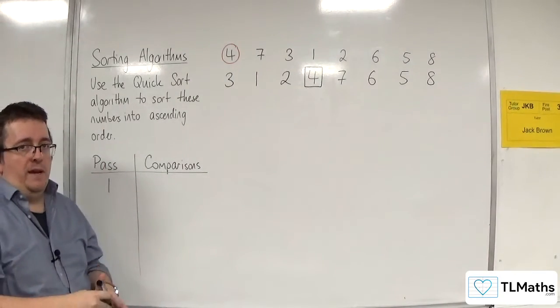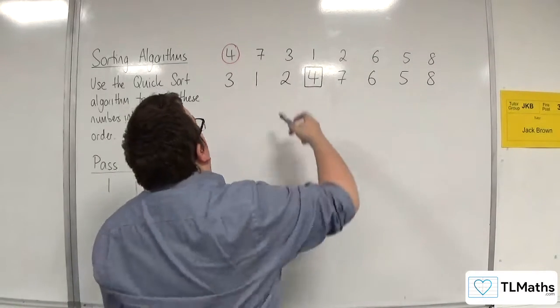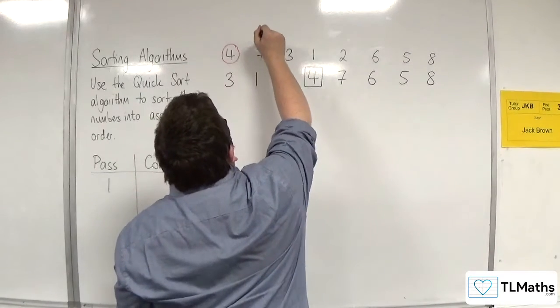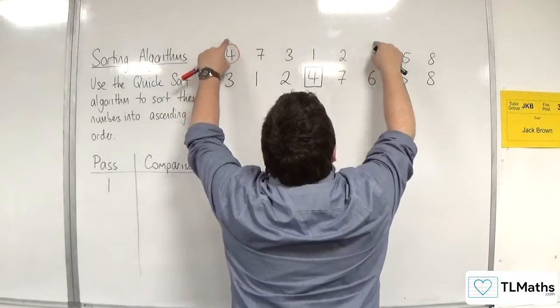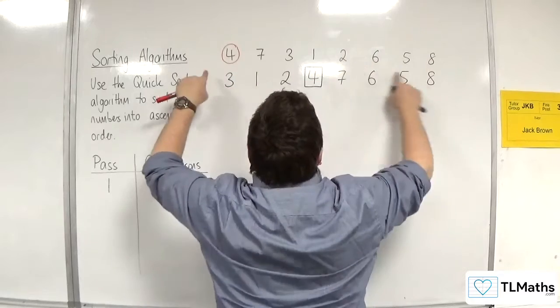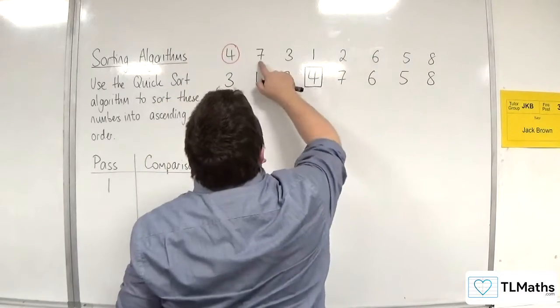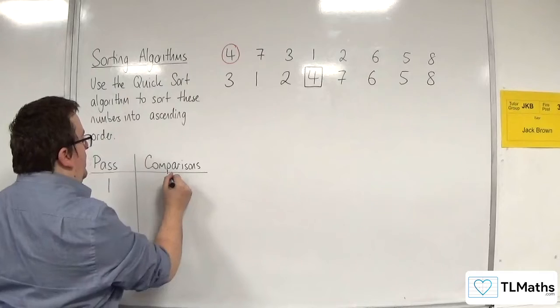How many comparisons did I make? Well, that's not immediately obvious, but I would have had to have compared four with seven, four with three, four with one, four with two, four with six, four with five, and four with eight, in order to put them in that order. So seven comparisons had to be made.